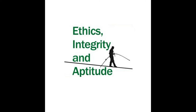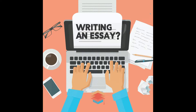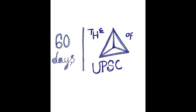Coming to the next leg of the precious triangle — Ethics, Integrity, and Aptitude. It is of 250 marks, and the plus point here compared to other general studies subjects is that you will have to cover only one subject, which is Ethics, for 250 marks. The last leg, which is the essay paper, is of 250 marks, and the interesting thing is that you will have to write only two essays. To summarize, the precious triangle of UPSC — consisting of Ethics, Optional, and Essay — adds up to 1000 marks out of the 1750 marks allotted for the Mains examination.